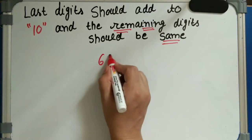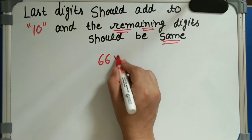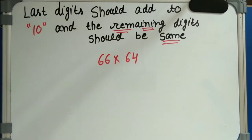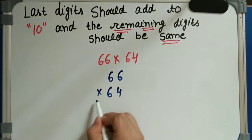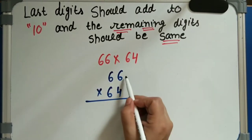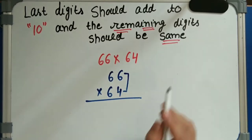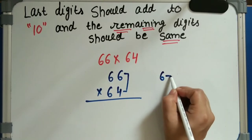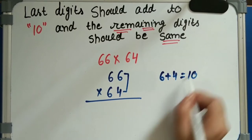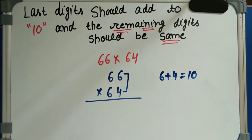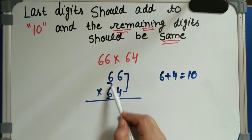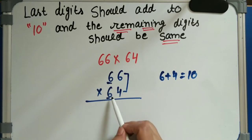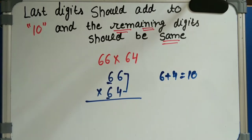The first example is 66 into 64. Here the first condition: the sum of the last digits should be 10. So 6 plus 4 equals 10. And the remaining digits — 6 here and 6 here — are the same. Both conditions are satisfied, so we will use this method.